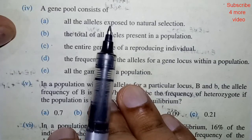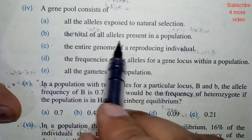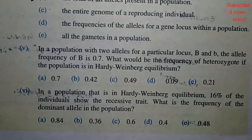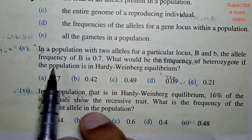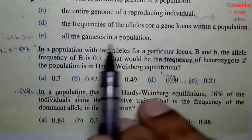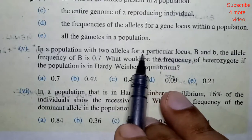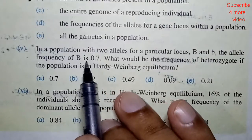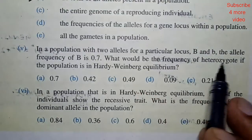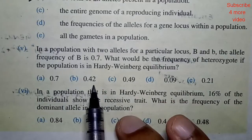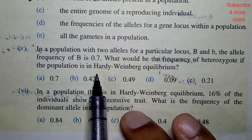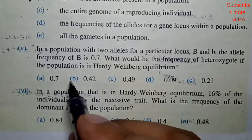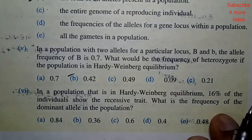That is basically the total of all alleles present in a population. In a population with two alleles for a particular locus, B and small b, the frequency of B is 0.7. What will be the frequency of the heterozygote if the population is in Hardy-Weinberg equilibrium? The answer will be 0.42.